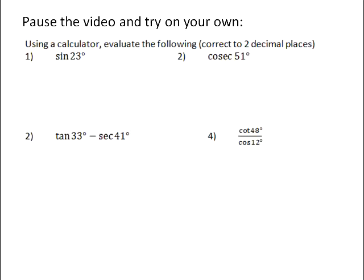So number one, very straightforward. We have a sine button on our calculator. So we punch in sine and then 23 degrees. And the value that our calculator gives us rounded off to two decimal places is 0.39.